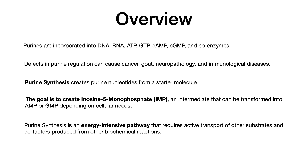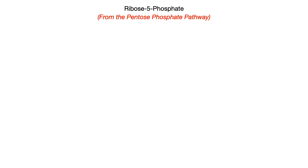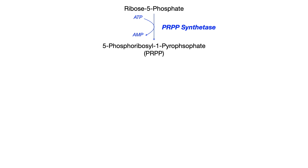De novo purine synthesis starts with ribose-5-phosphate, which comes from the pentose phosphate pathway. Ribose-5-phosphate is converted into 5-phosphoribosyl-1-pyrophosphate — or simply PRPP on USMLE, COMLEX, and in-class exams. The enzyme that catalyzes that conversion is PRPP synthetase, which synthesizes PRPP. This step requires ATP, so ATP in the process will go to AMP.